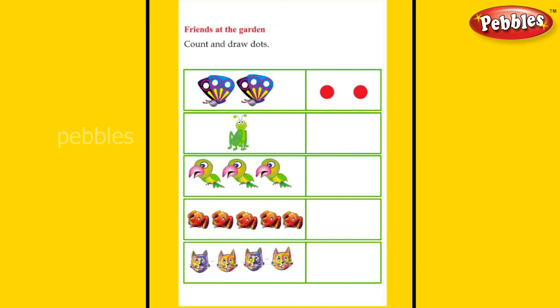Then next picture — how many dogs? One, two, three, four, five — five dogs. How many dots do you want to draw? Five dots. Very good. Then next one: how many cats? Four cats — draw four dots.